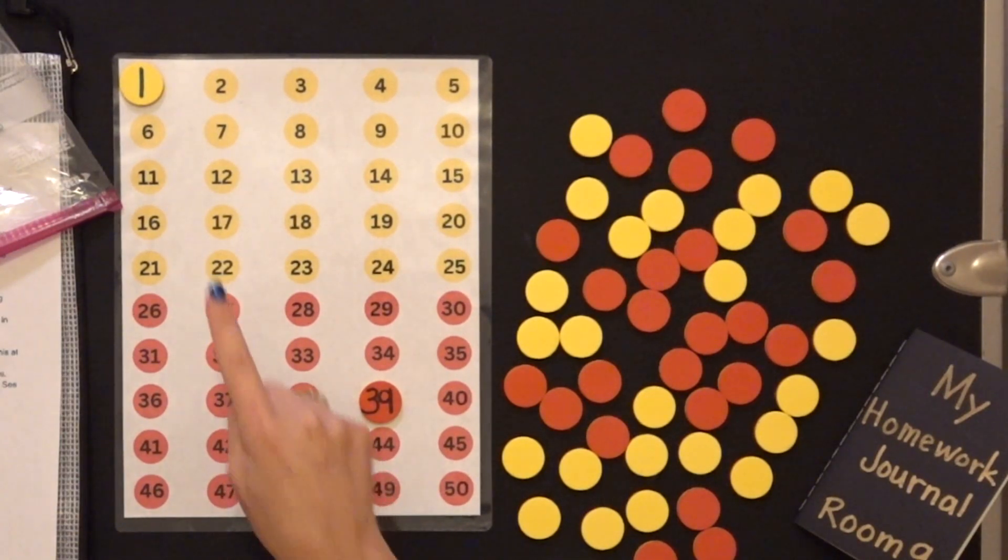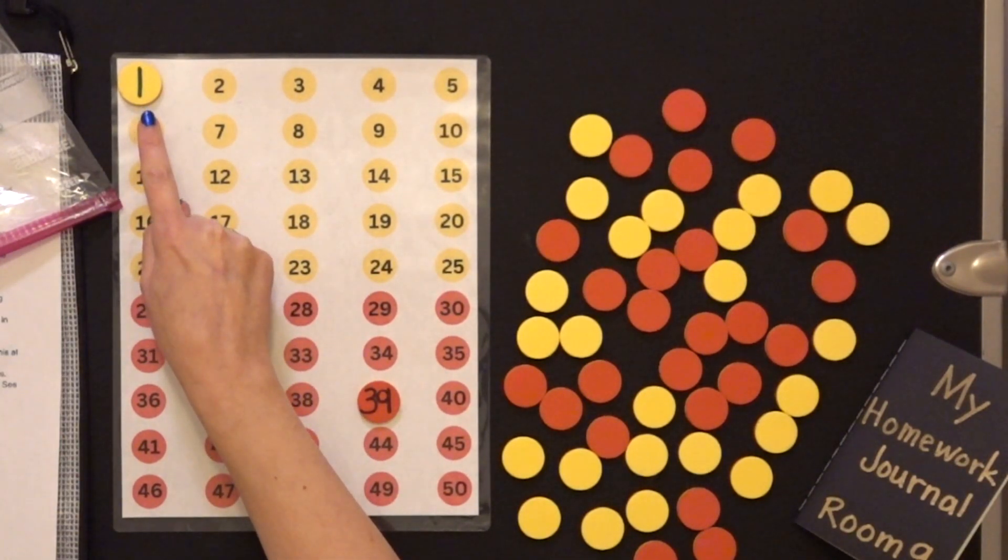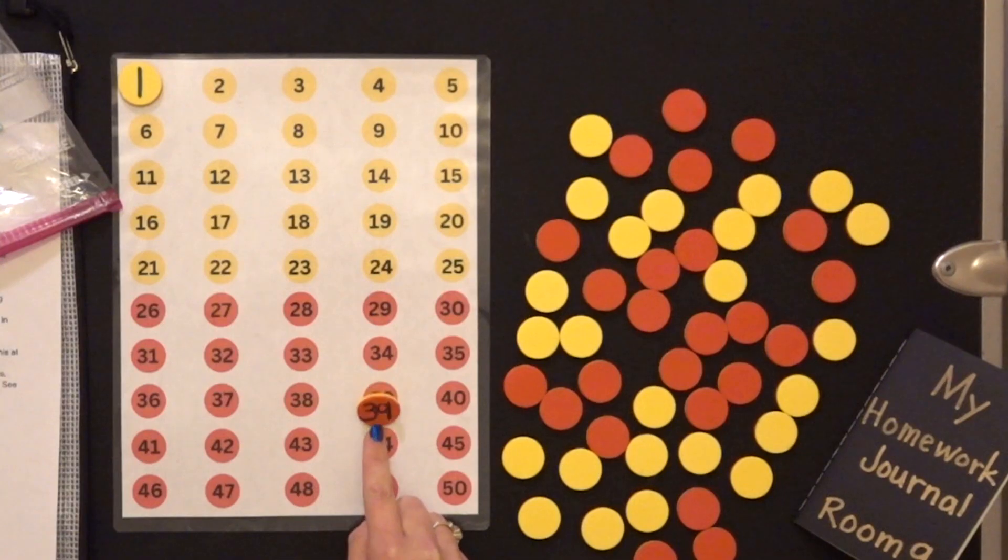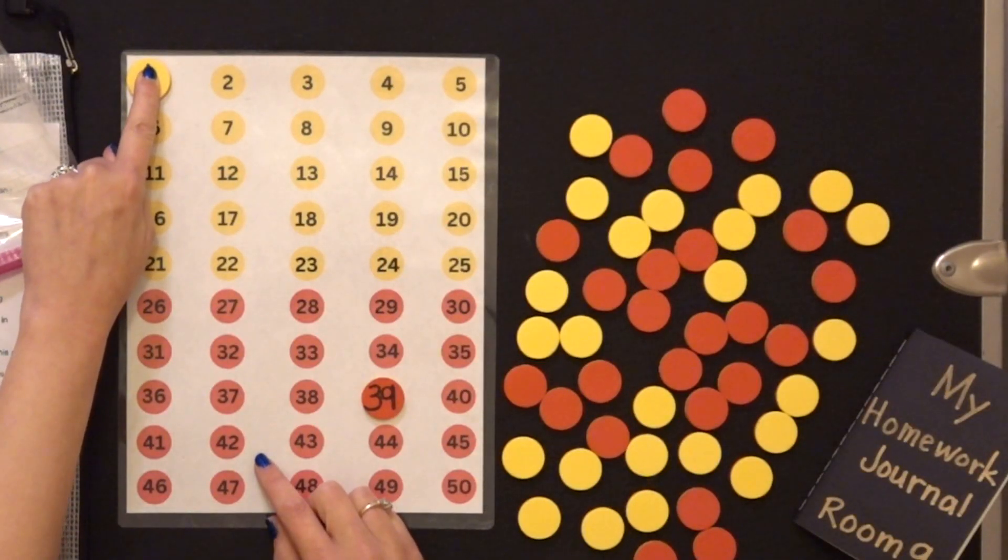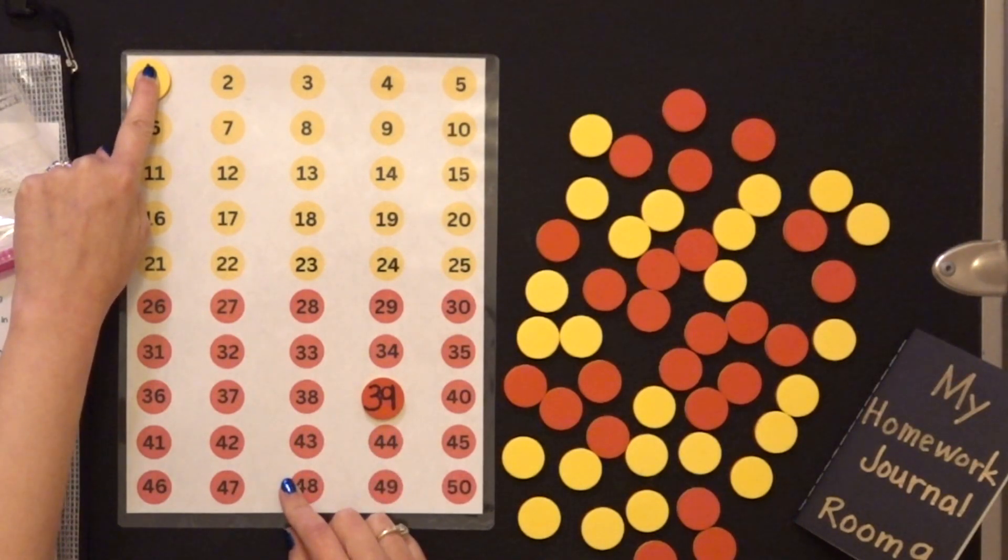And what I need to do is count from number one to 39. Now I'm going to get number one stuck in my head. Remember, I don't say that one, so I'm going to cover it with my finger. And then I'm going to count on from one till I get to 39.